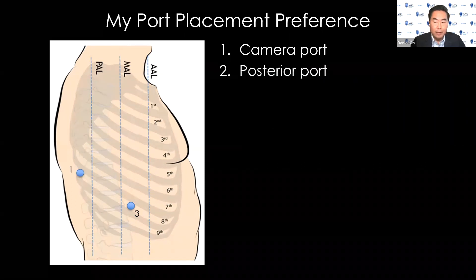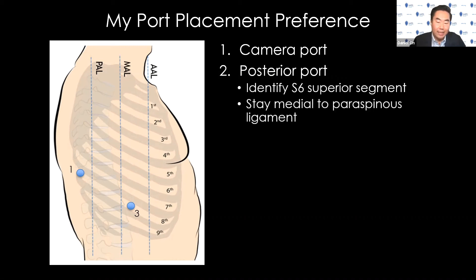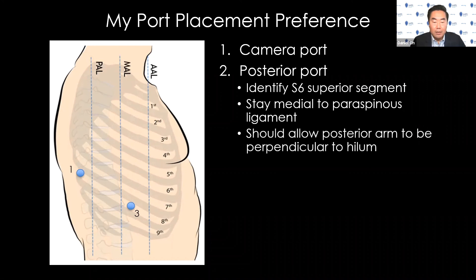The next step is placing the posterior port. I look with the camera at the lower lobe and identify the superior segment, S6. I want the posterior port to come out at the level of S6, and I look for the paraspinous ligament — I want to stay medial to that. If you go too far posteriorly, you'll run out of room for that posterior arm to retract the lung, especially for elevating it. Placing at the level of S6 means the arm comes in posterior to the hilum, allowing you to cradle the lung and pull it posteriorly for anterior exposure, or push the hilum forward for a nice posterior exposure.